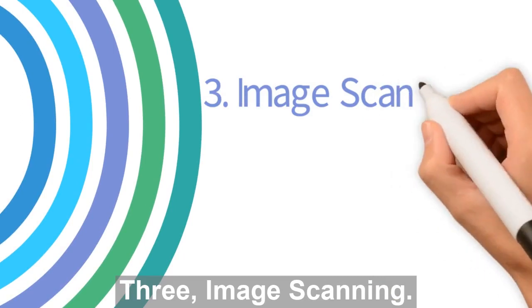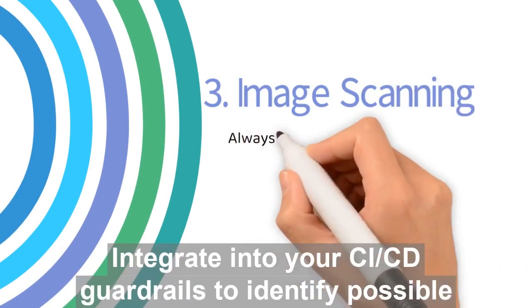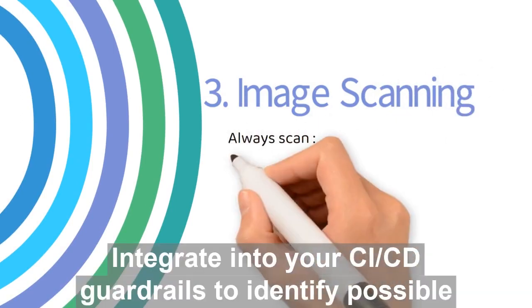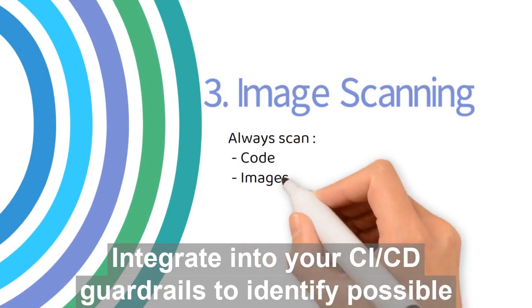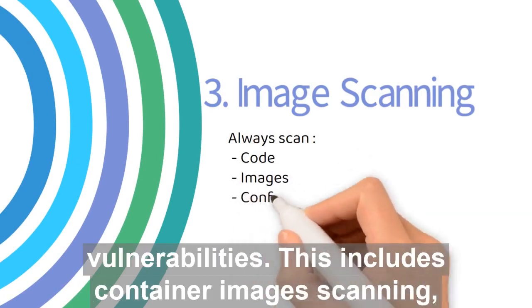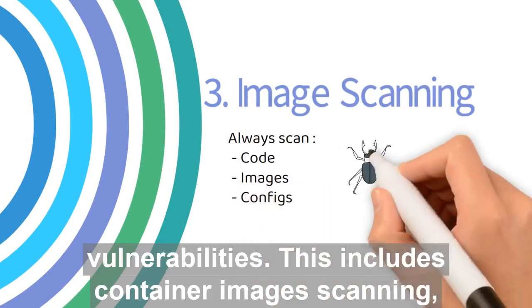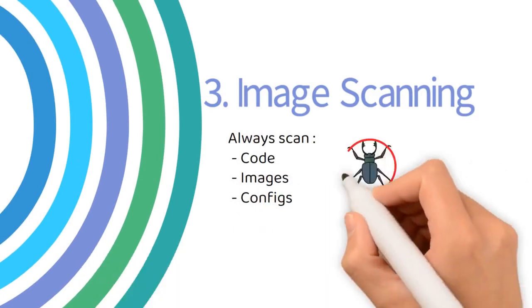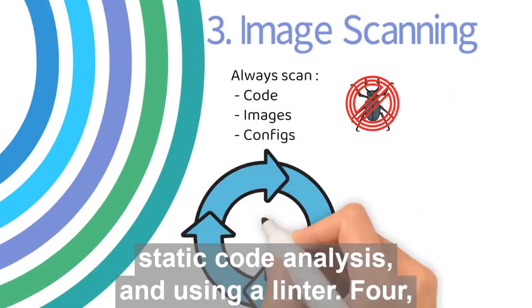Three: image scanning. Integrate into your CI/CD guardrails to identify possible vulnerabilities. This includes container image scanning, static code analysis, and using a linter.